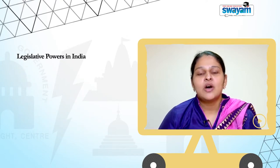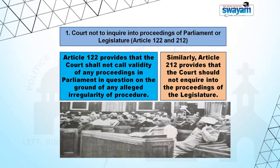The third aspect of legislative powers in India is relating to interference of legislature in judiciary. Firstly, courts should not inquire into proceedings of Parliament or Legislature. Article 122 provides that the Court shall not call the validity of any proceedings in Parliament in question on the ground of any alleged irregularity of procedure. Similarly, Article 212 provides that the Court should not inquire into the proceedings of the Legislature.